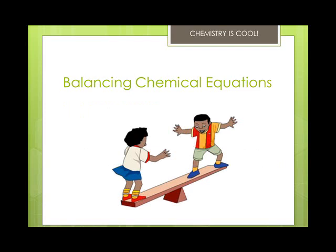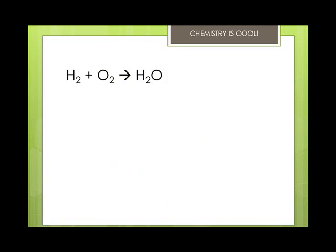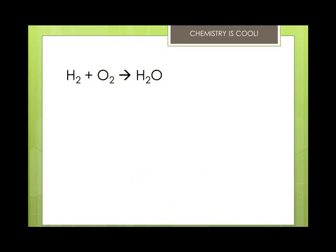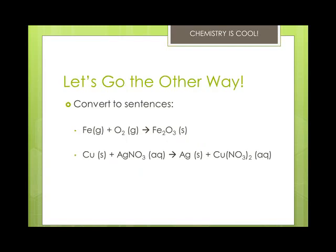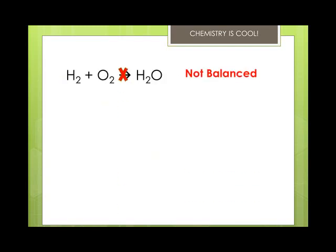Atoms cannot be created or destroyed, so all the atoms we start with must be the same amounts and types we end up with in the reactants and products. A balanced equation has the same number of atoms of each element on both sides. Let's look at H2 + O2 → H2O. When we count the atoms on each side, we can see it is not balanced.